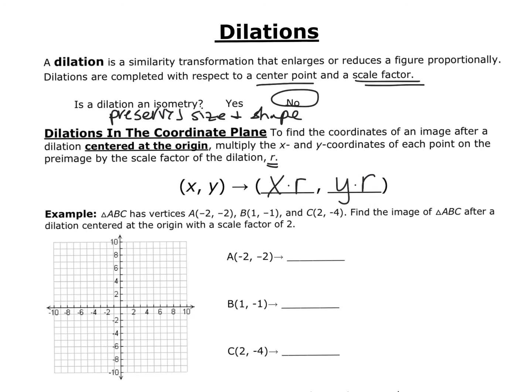For example, triangle ABC has vertices A at (−2, −2), B at (1, −1), and C at (2, −4). Find the image of triangle ABC after a dilation centered at the origin with a scale factor of 2. So we're going to multiply all of the coordinates by 2.